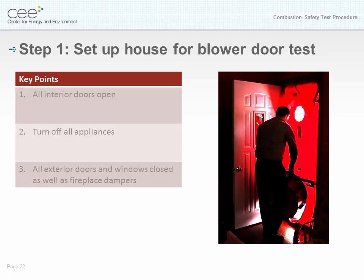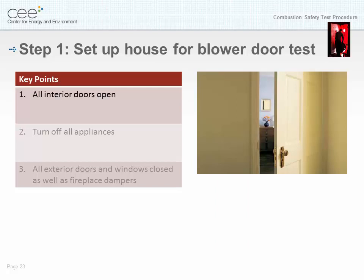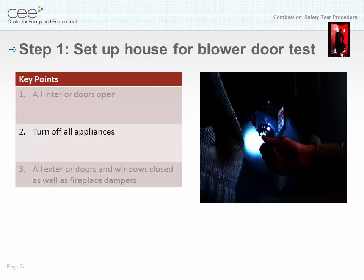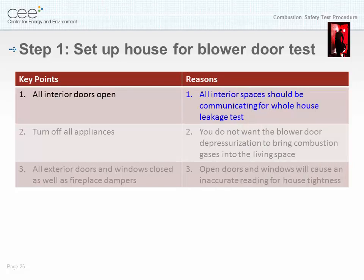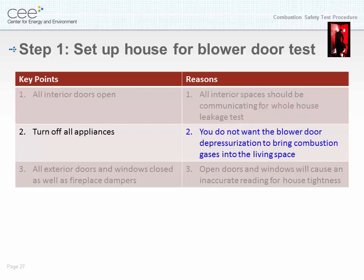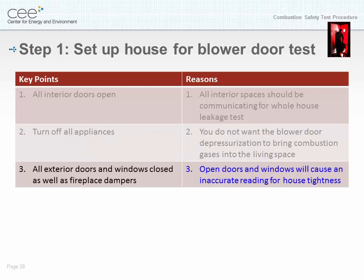Step one: set up house for blower door test. Key points: all interior doors are open; turn off all appliances; all exterior doors and windows are closed as well as fireplace dampers; all interior spaces should be communicating for whole house leakage test. You do not want the blower door depressurization to bring combustion gases into the living space. Open doors and windows will cause an inaccurate reading for house tightness.